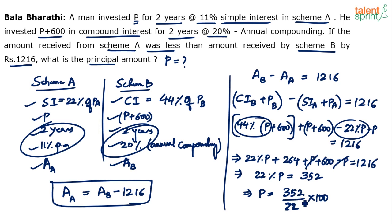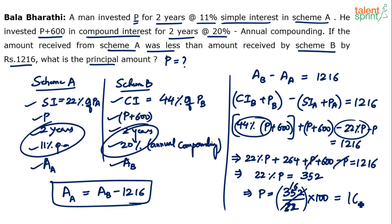352 divided by 22: split 352 as 330 plus 22. 330 divided by 22 is 15, 22 divided by 22 is 1, so 15 plus 1 equals 16. Therefore P equals 16 multiplied by 100 equals 1600. The final answer is 1600.